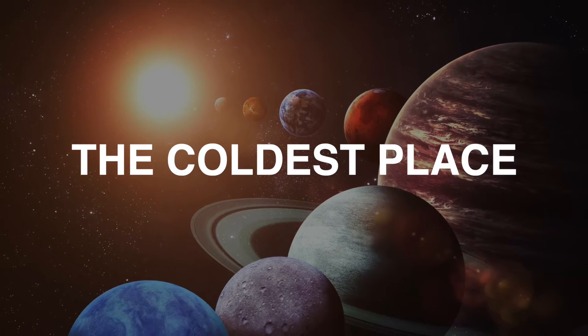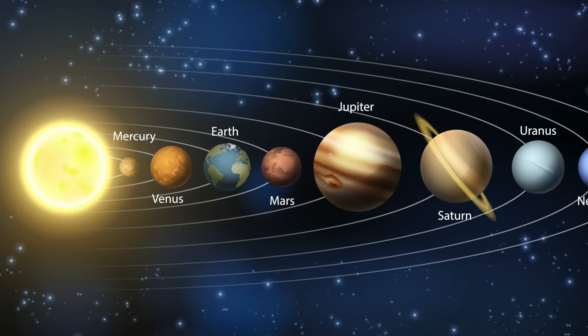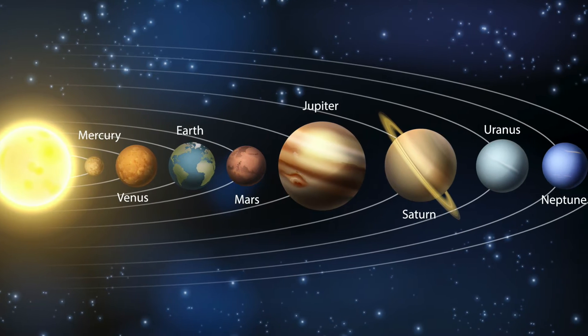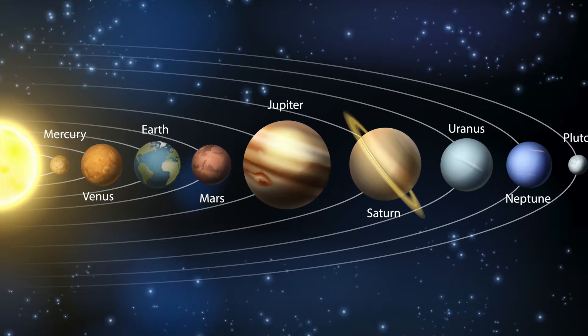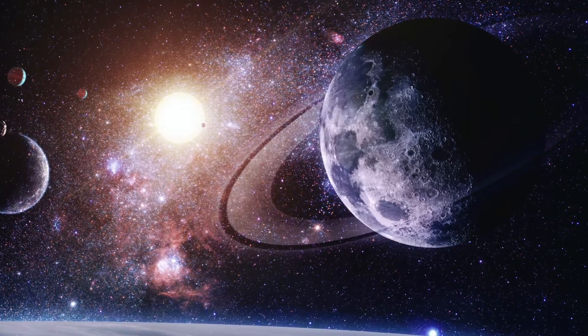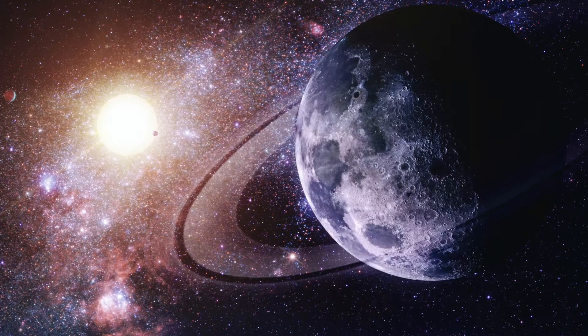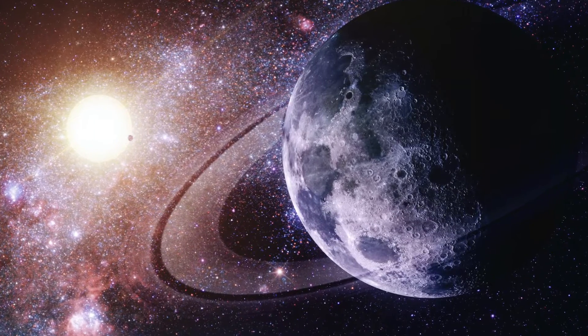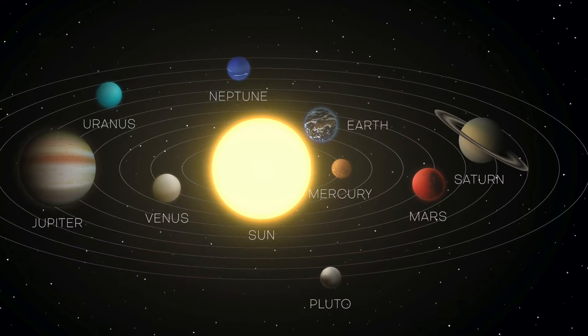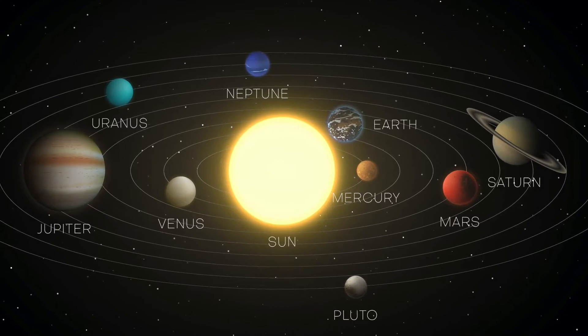The coldest place in the solar system. Uranus is about 2.9 billion kilometers away from the Sun. Given this enormous distance, it is not surprising that the minimum atmospheric daytime temperature is an icy minus 224 degrees Celsius. Uranus is one of the coldest places in our solar system.